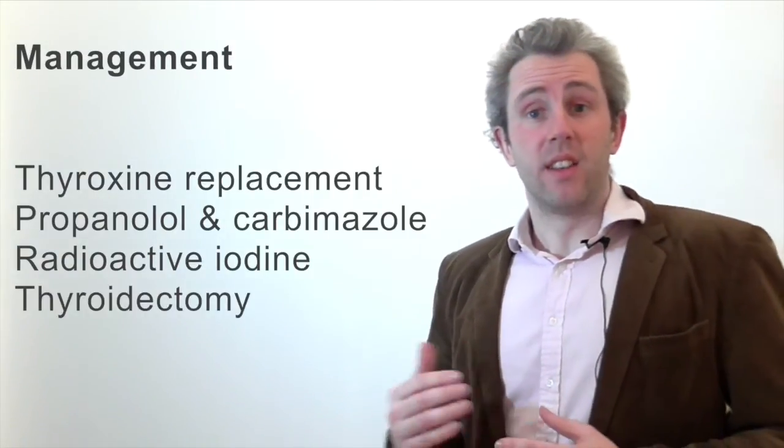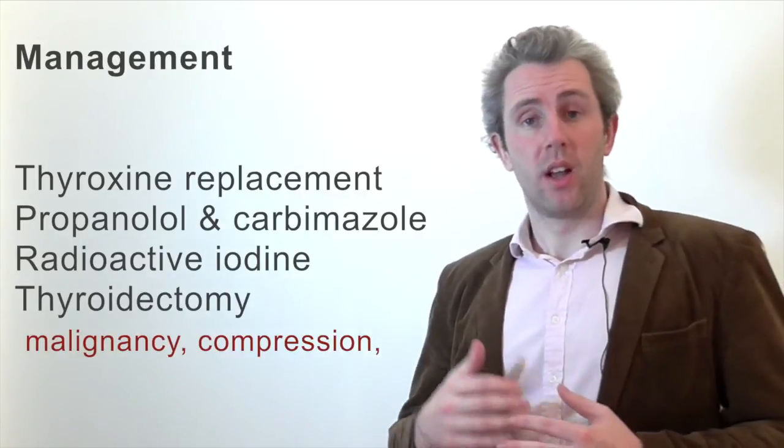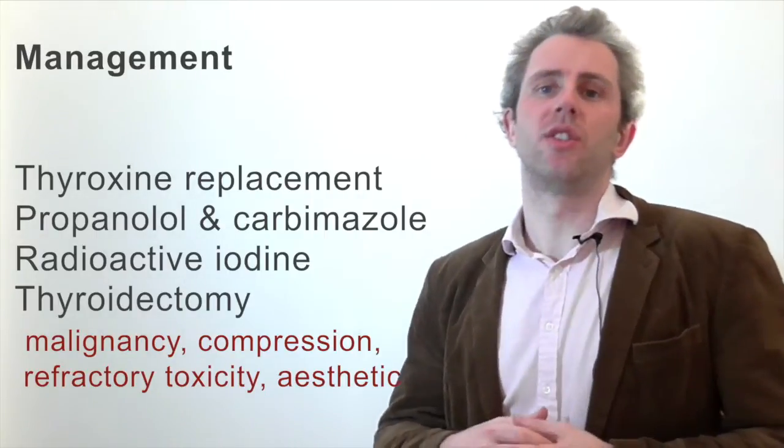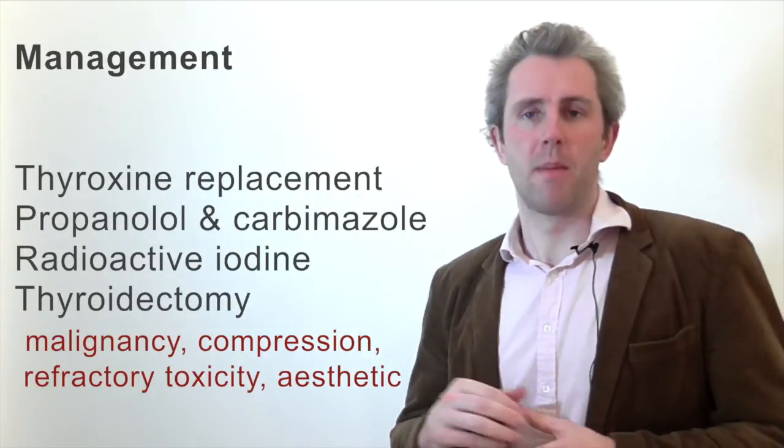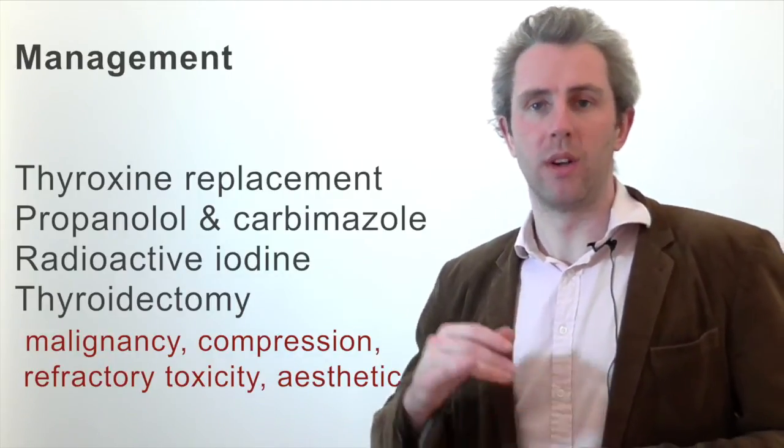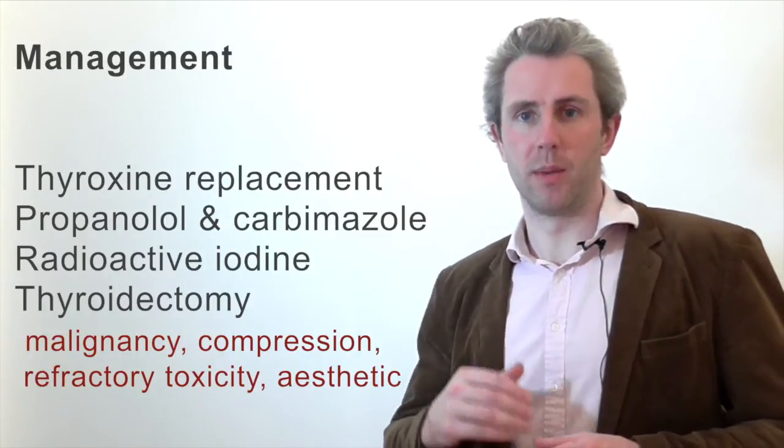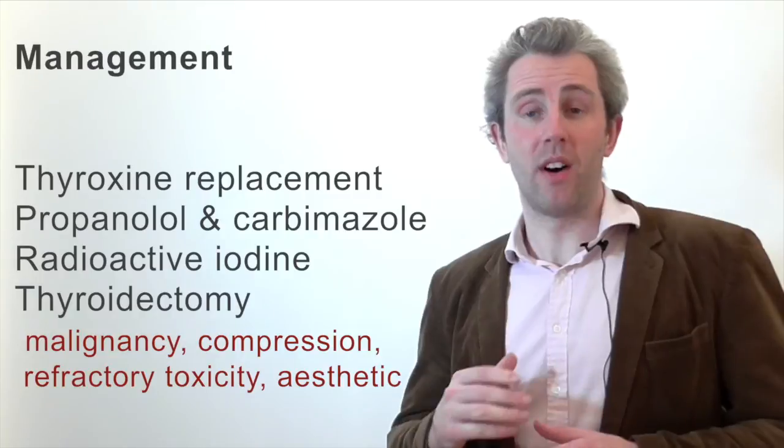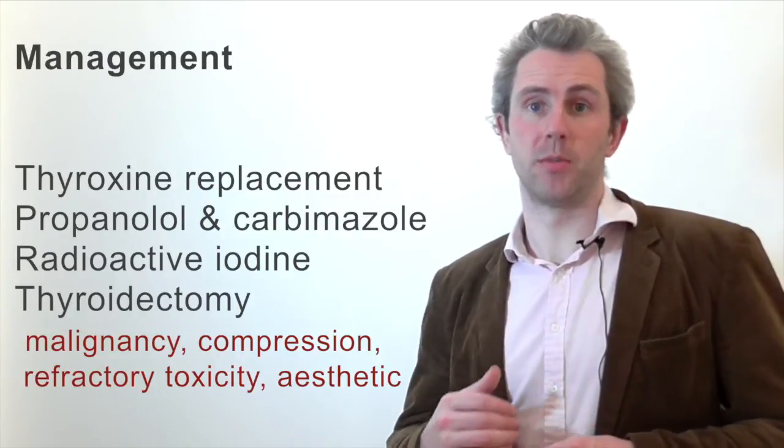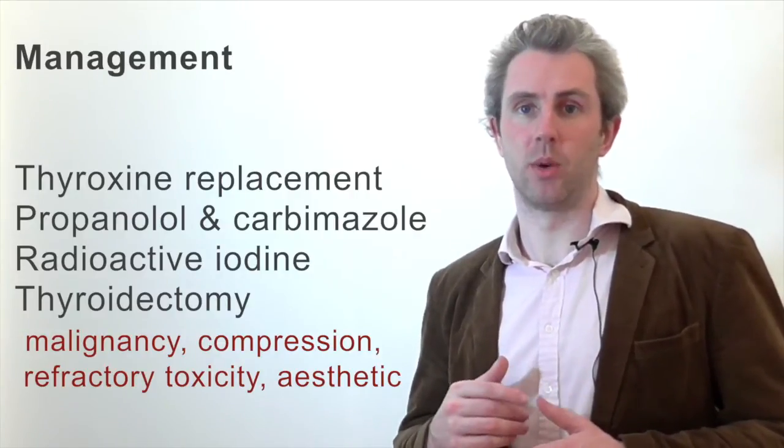Thyroid surgery is indicated in those with malignancy or suspicion of malignancy, compressive symptoms, thyroid toxicity refractory to medical therapy or anxiety and depression associated with poor cosmesis. Partial thyroidectomy can be considered in those with an asymmetric goiter with an enlarged side causing obstruction or in patients with a possible malignancy where fine needle aspiration was unable to exclude it. If the specimen confirms malignancy then a completion thyroidectomy can subsequently be performed.